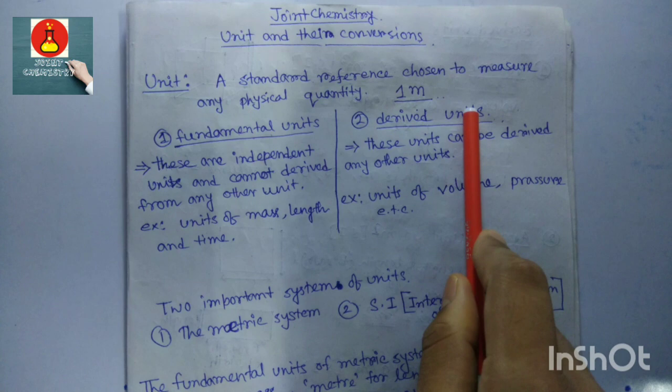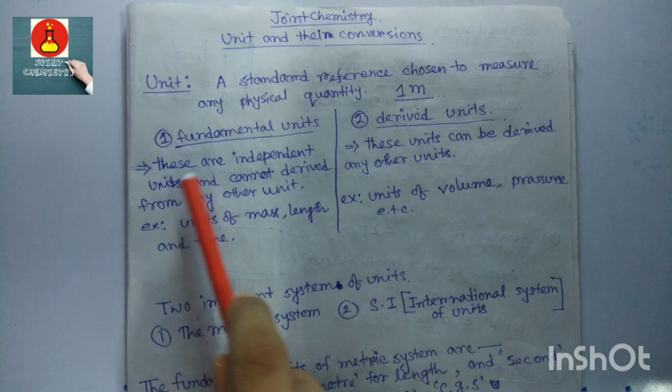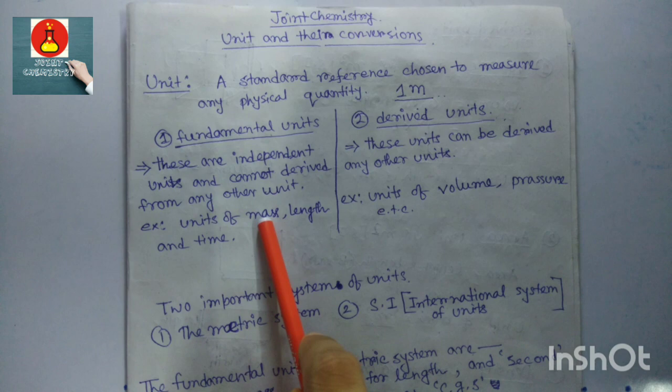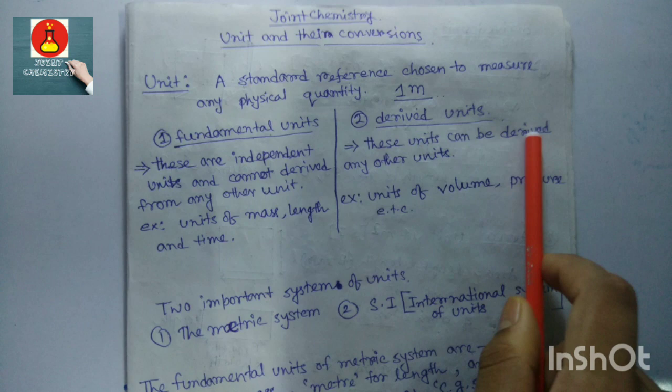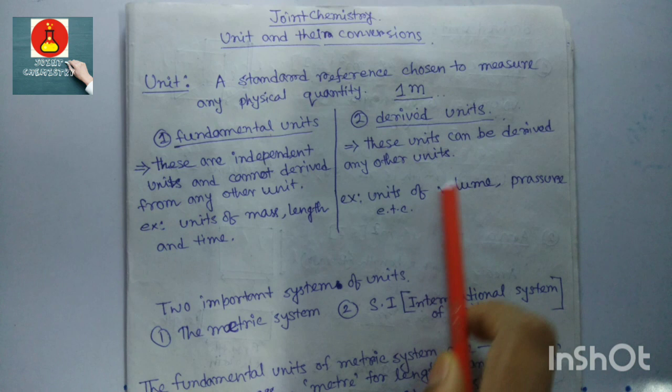There are two kinds of units: fundamental units and derived units. Fundamental units are independent units and cannot be derived from any other units — for example, units of mass, length, and time. Derived units can be derived from other units — for example, units of volume, pressure, etc.